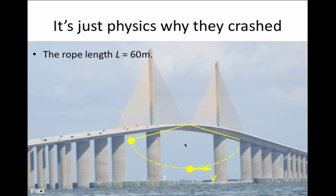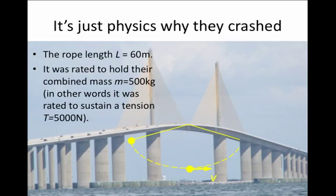In the case of what they were trying to do, the length of the rope was about 60 meters, so half the height off the bridge. It was rated to hold their combined mass of about 500 kilograms. In other words, it was rated to hold a tension of about 5,000 newtons, because when I multiply by g, mg is about 5,000 newtons.